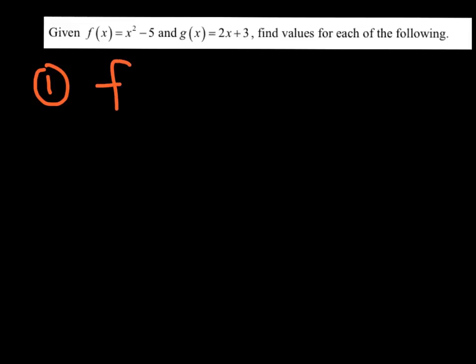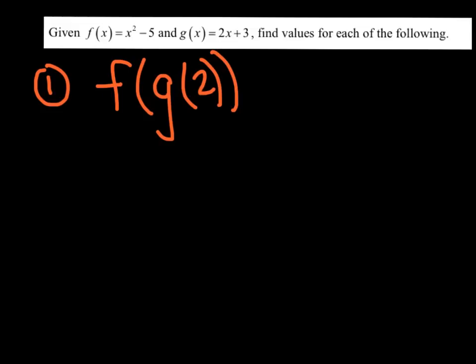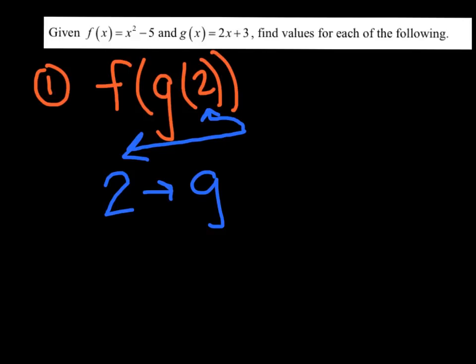Let's dive right into our first example. Given f(x) = x² − 5 and g(x) = 2x + 3, find the values for each of the following. For example 1, let's find f of g of 2. We want to start with the innermost part — we're going to work backwards, starting on the right side. The first thing I see is the number 2, so 2 goes into g, and that output goes into f. I'm starting with 2, substituting that into g, then taking that output and substituting it into f.